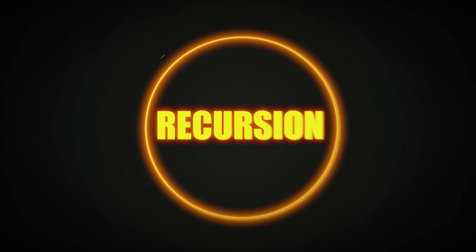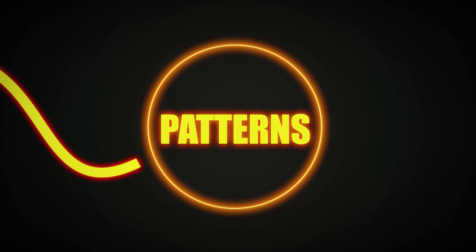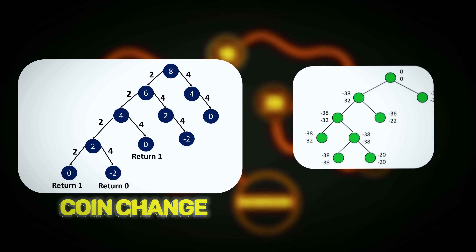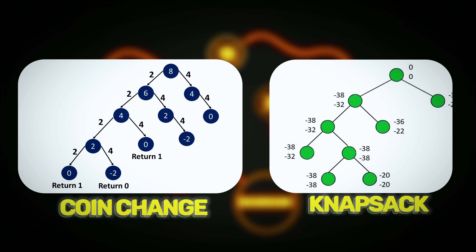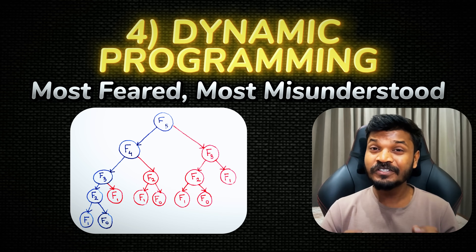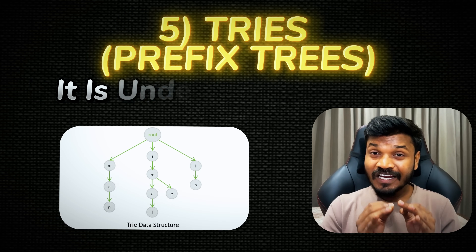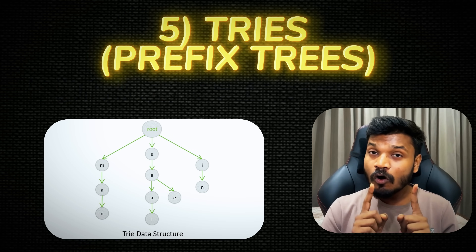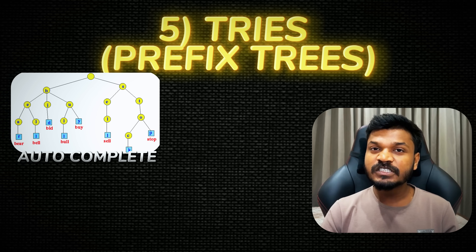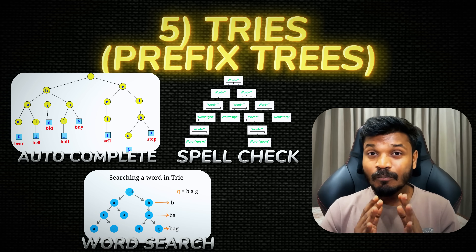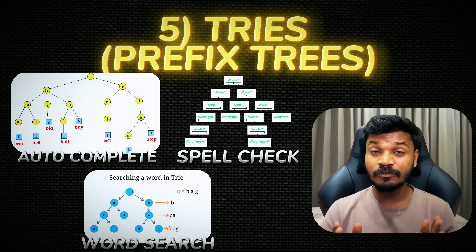If you skip this structure with DP, you'll stay stuck forever. Fifth: Tries — the underrated gold mine. Autocomplete, spell check, word search — this is where tries shine. Most people skip it; if you don't, you'll stand out. Tries is your flex topic.